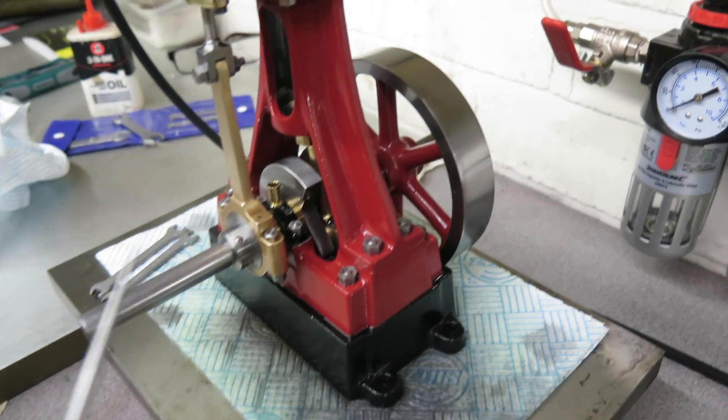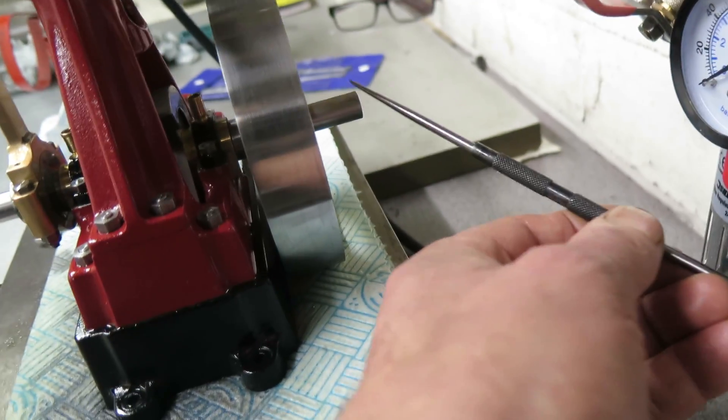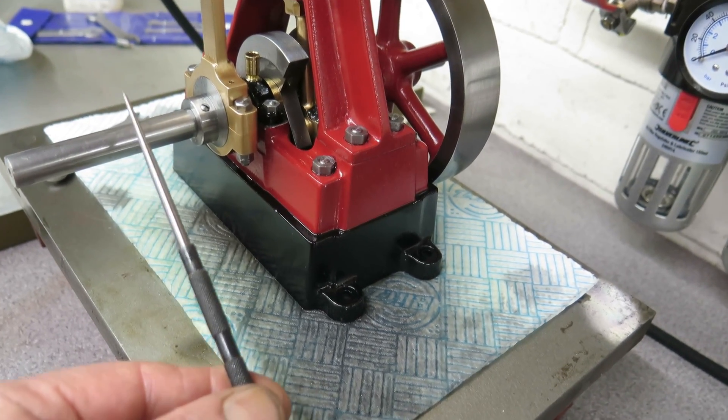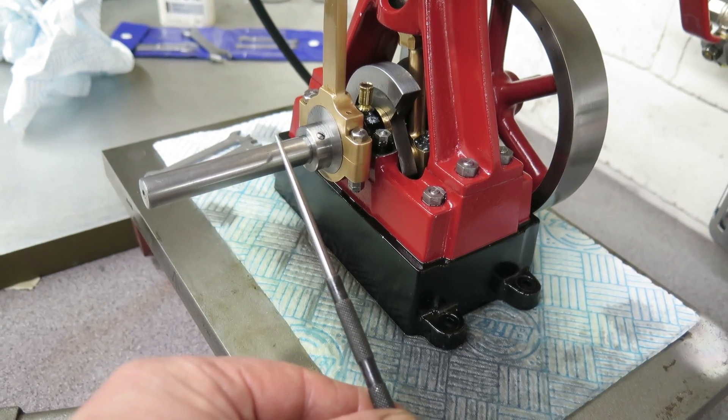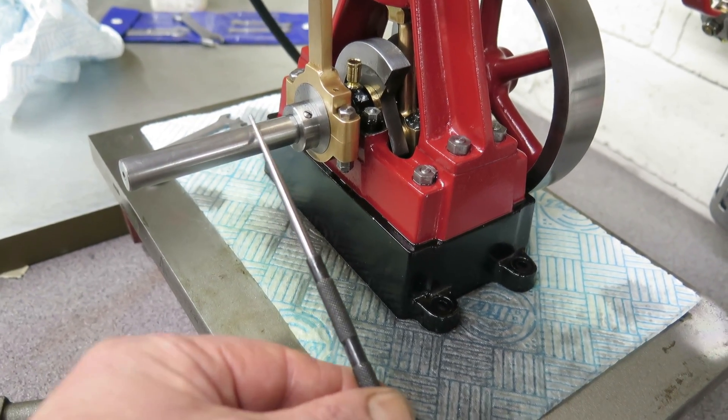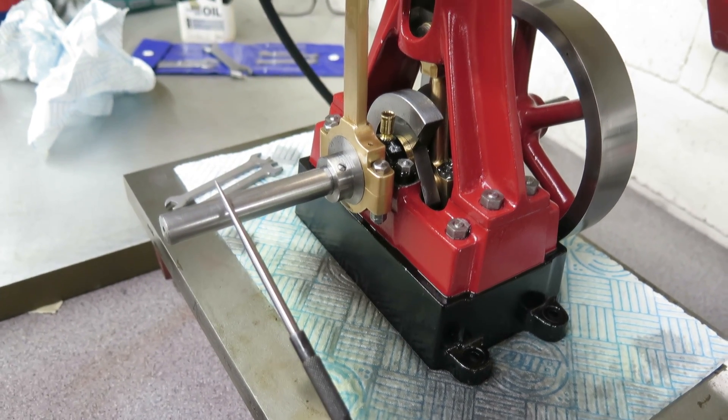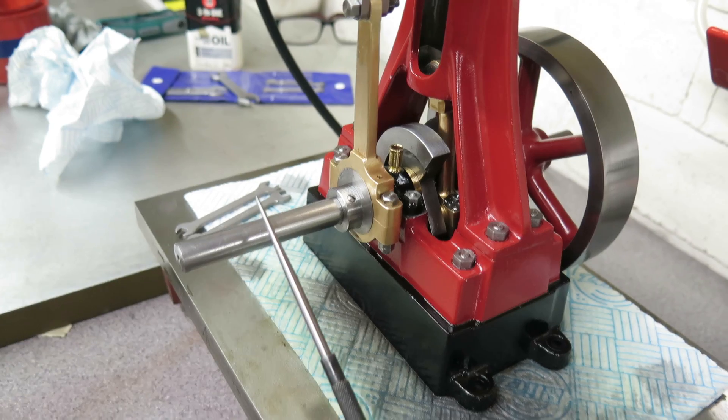And I want to put a flywheel, or a smaller flywheel with some grooves in for driving something, or perhaps a disc wheel, something of that sort there. And then an extra bearing outboard of that to help eliminate any whip in the crankshaft. That's worked out quite well, so probably the best thing to do is switch it on and see if it...